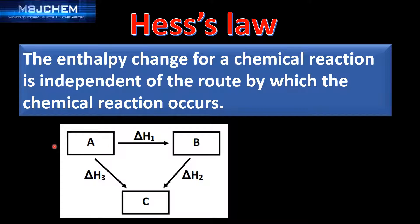Let's look at an example using an enthalpy cycle. Starting with reactants A, there are two ways we can make C. We can either go via B and then to C, or we can go straight from A to C. According to Hess's law, whichever route we go, the enthalpy change from A to C will be the same.